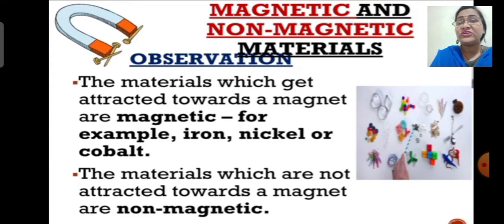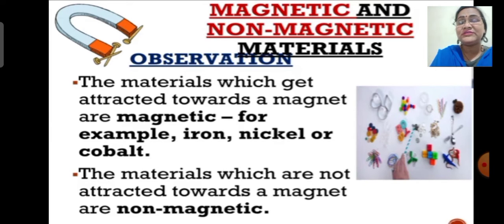Then we have seen what are non-magnetic materials. If a magnet is not capable of attracting certain materials towards it, then those materials are known as non-magnetic materials. For example, plastic, wood, rubber, etc. are non-magnetic materials.